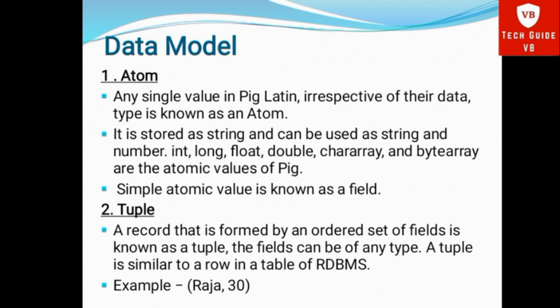Next, Tuple. A record that is formed by an ordered set of fields is known as a Tuple. The field can be of any type. A Tuple is similar to a row in a table of RDBMS. So, the ordered set of fields is known as Tuple. For example, (Raja, 13) is an example of a Tuple.